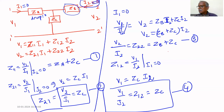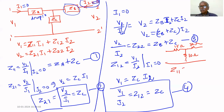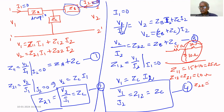Now consider the circuit with 15 ohm, 10 ohm, and 30 ohm resistors. For this T-network: z11 = 15 + 10 = 25 ohm, z12 = z21 = 10 ohm, and z22 = 30 + 10 = 40 ohm.